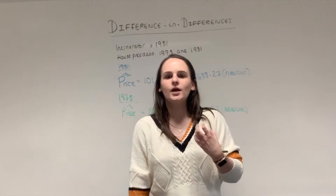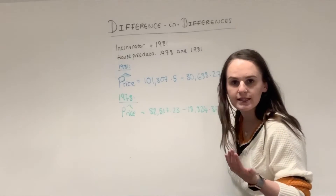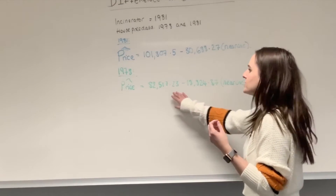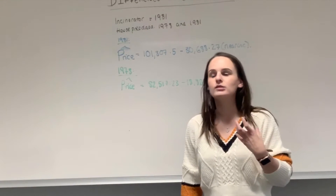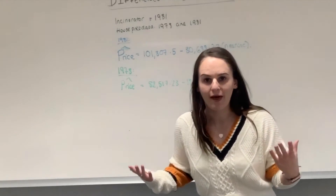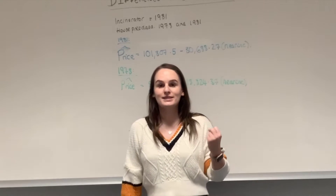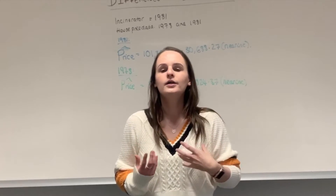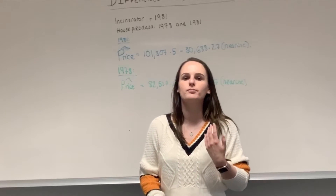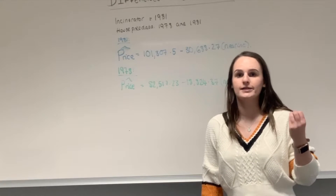The problem is that's not quite right. We need to consider: what would the effect be if people lived in that area before the incinerator was built? Running the regression in green on the 1978 data — before the incinerator existed — also shows a negative effect on house prices in that area. This tells us the incinerator itself isn't solely causing the effect; it may simply be a poorer area where the incinerator was placed, meaning house prices were already lower.